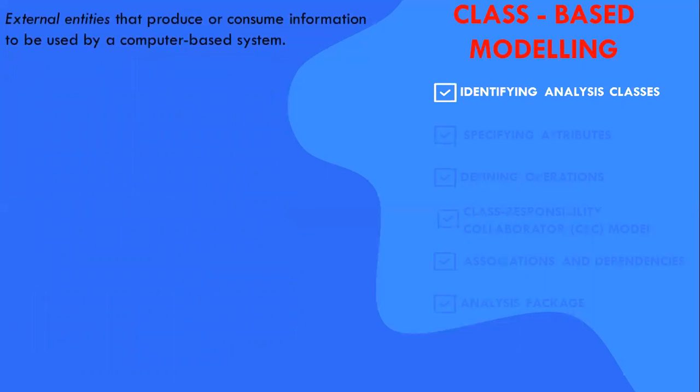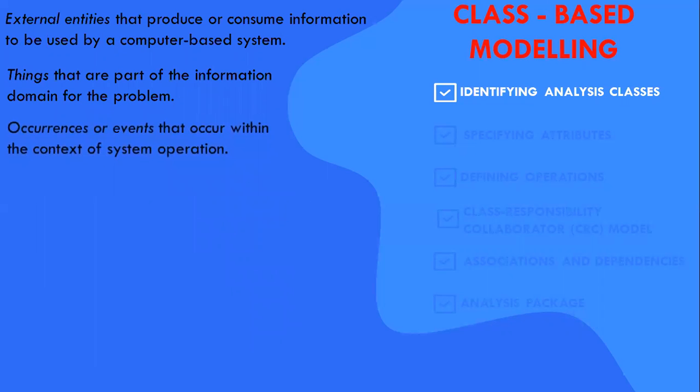Analysis classes manifest themselves into one of the following ways: External entities that produce or consume information to be used by a computer-based system. Things, for example, reports, displays, letter signals that are part of the information domain for the problem. Occurrences are events that occur within the context of the system operation.